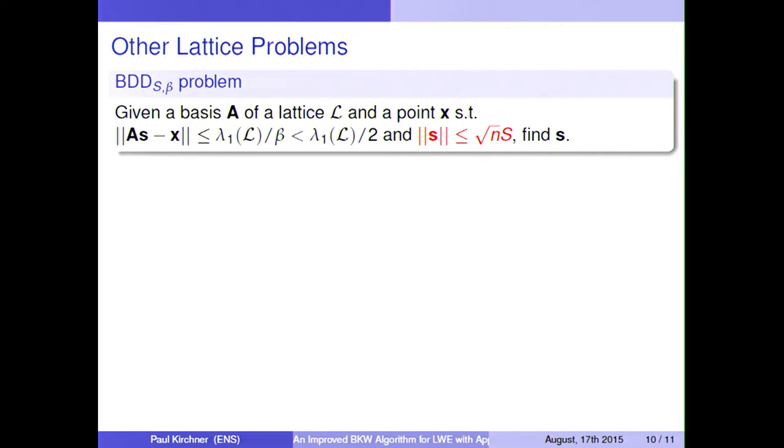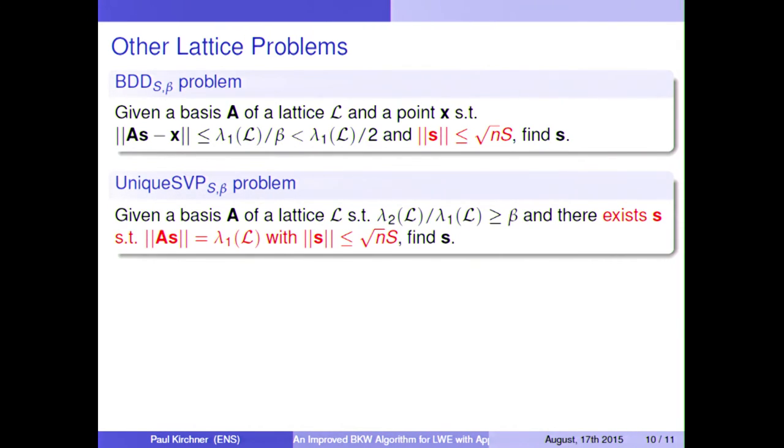So the first one is BDD. We are given a basis of a lattice and a point which is close to the lattice. And in the usual problem, we have to find the lattice point. And in this one, we also know that the vector coefficient is small. And here you can see that smallness is expressed as L2 norm. Because our algorithm also works for binary LWE, but also if the secret is small in infinity norm, it can be modified.